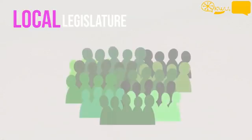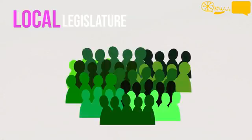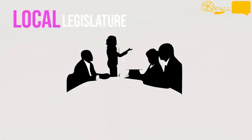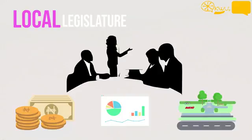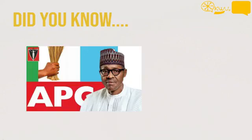The local government council also has a legislature comprised of elected counselors. The LGA Council takes responsibility for tasks like the collection of taxes and fees, economic recommendations to the state, and the construction and maintenance of roads, streets, and public places.